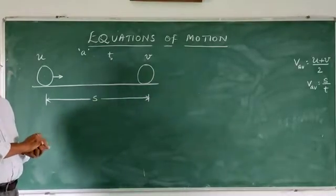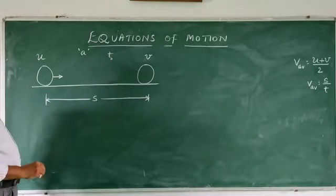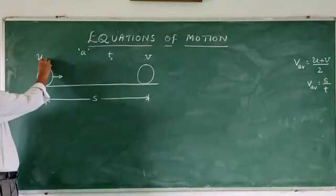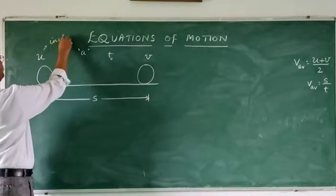What is acceleration? Let us look at a body. A ball is lying on a floor. Initially, the velocity of the body is U. U is called initial velocity.